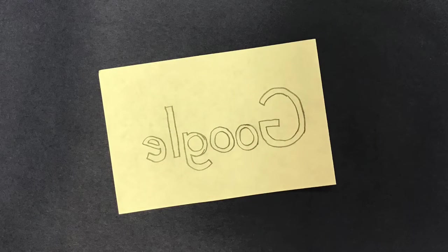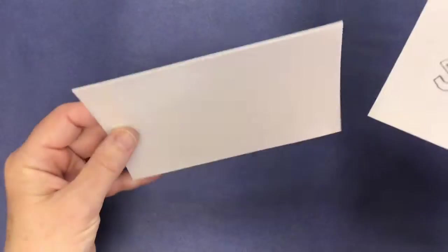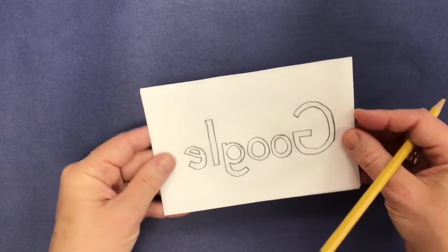So it will look something like this, as if you could put it to a mirror and see it correctly. Now you're going to take your design and put it onto the styrofoam printing plate so that it will be the mirror image.